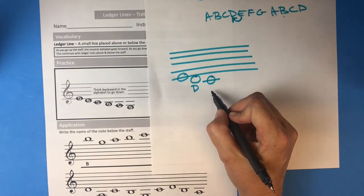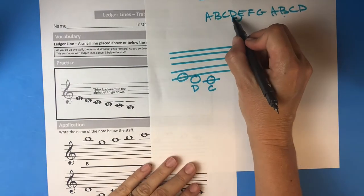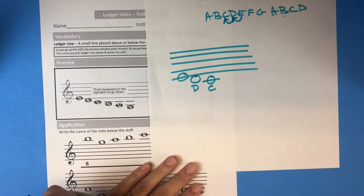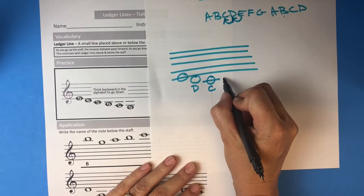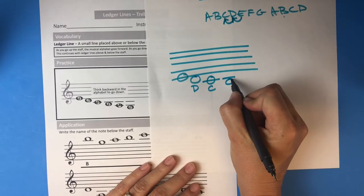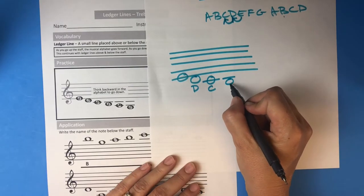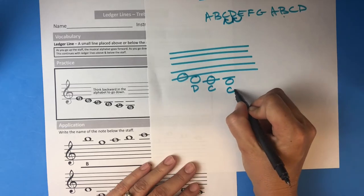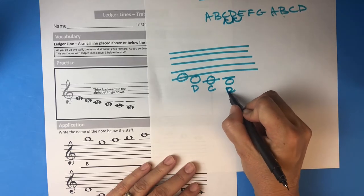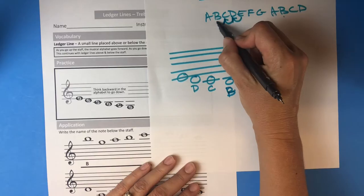That's a C, because the note before D in the alphabet is C going backwards. Then below that line, it's like it's hanging on a space, and the note below C is a B.